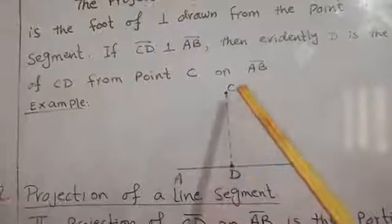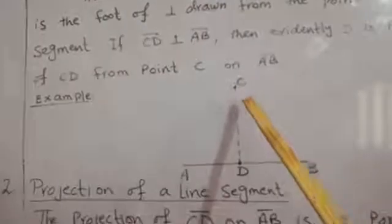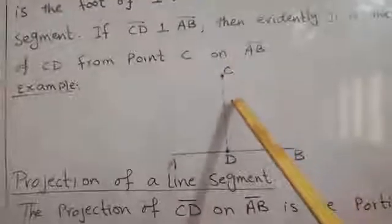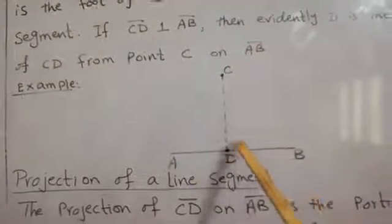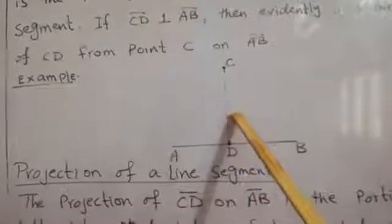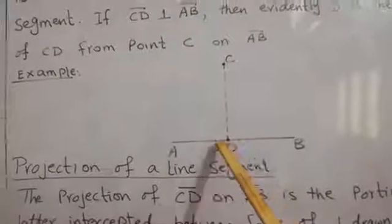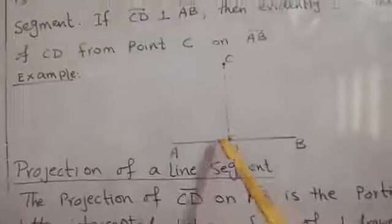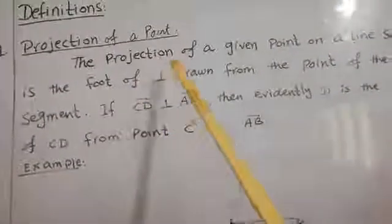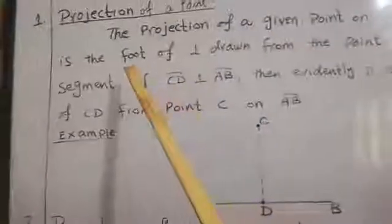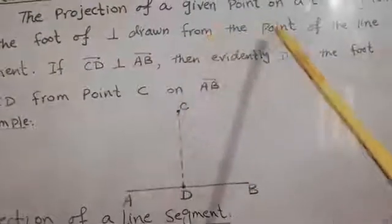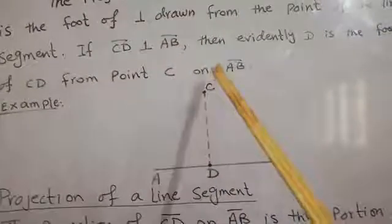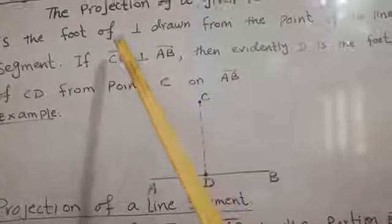So if we draw the perpendicular line on that line segment AB — we draw the perpendicular line CD on line segment AB — then the foot, or the point where this perpendicular intercepts the line, is known as the projection of that point. The projection of a given point on a line segment is the foot of the perpendicular drawn from the point. You can see that this is line segment AB and there is a point C, and the projection of point C is the foot of the perpendicular drawn from that point.